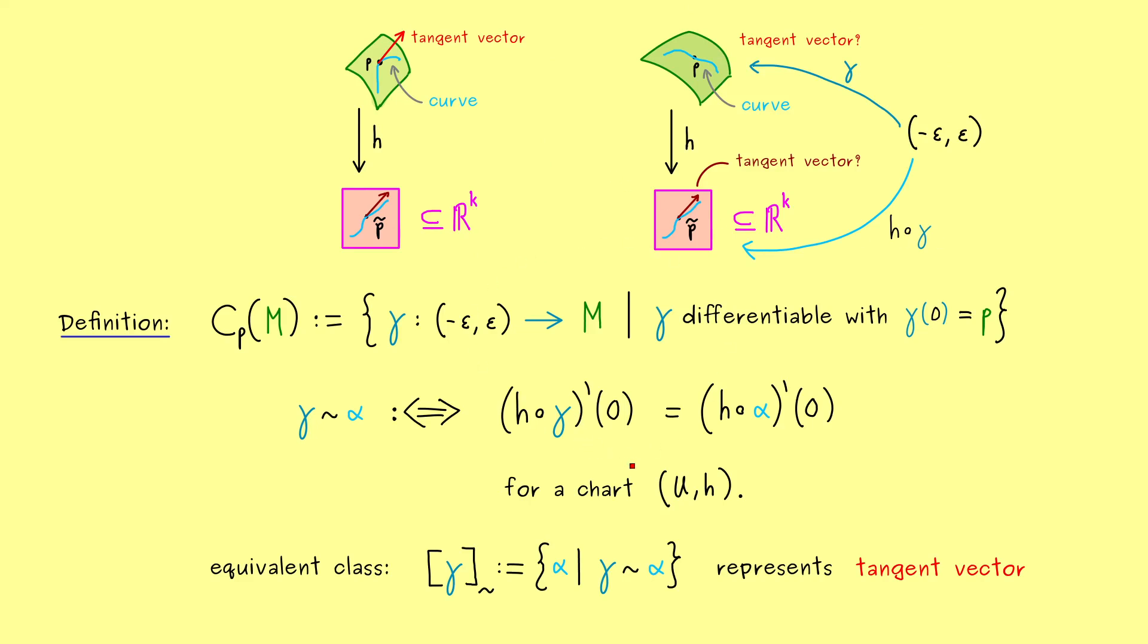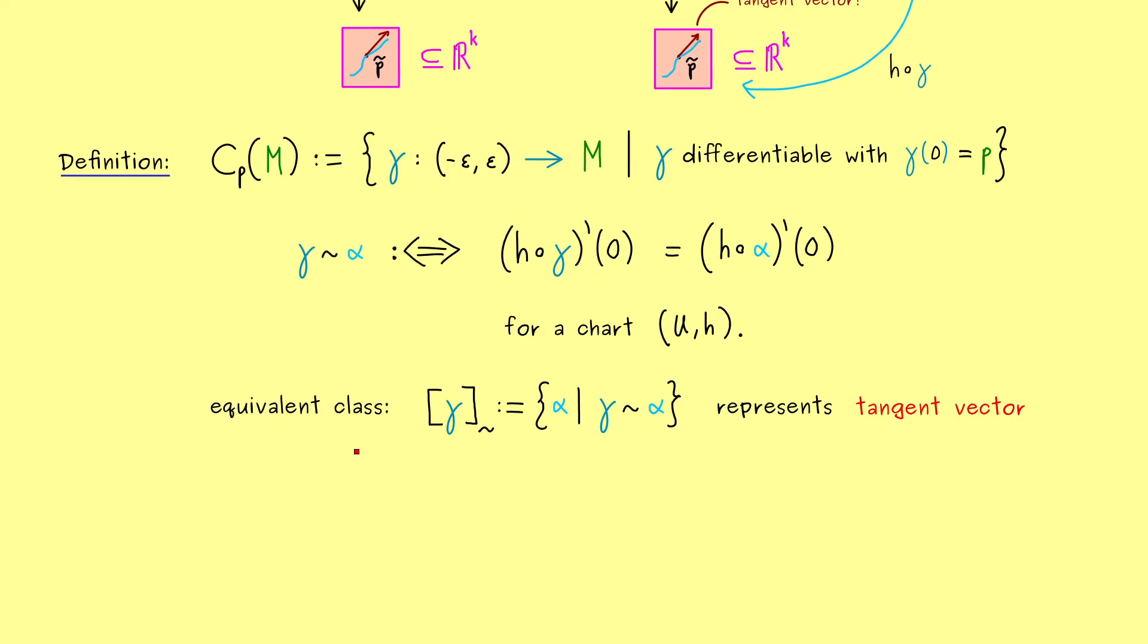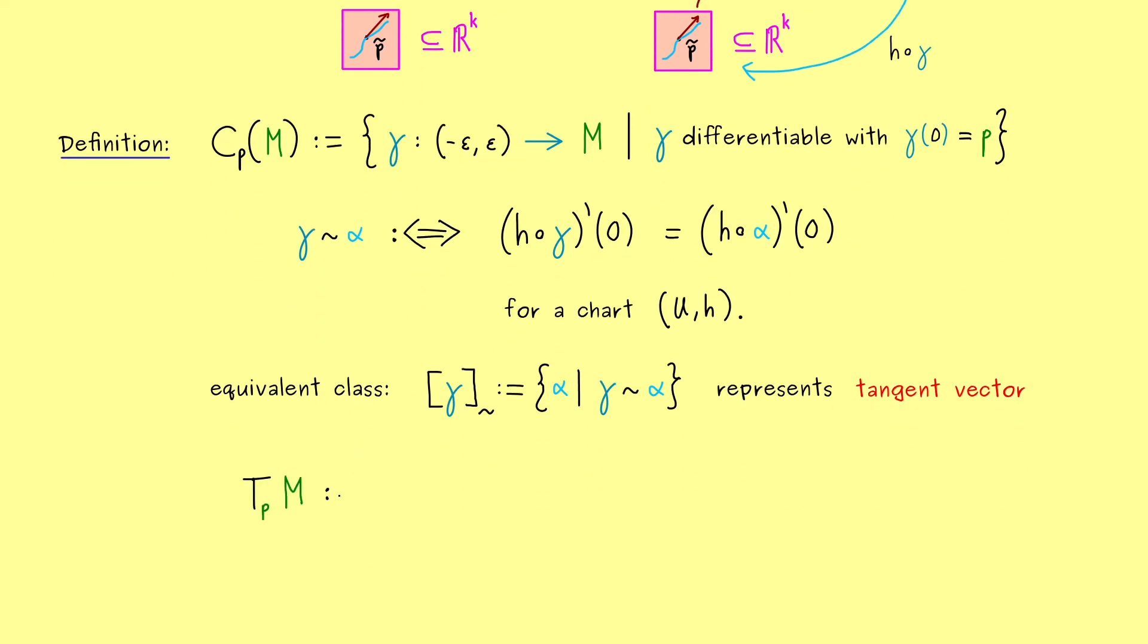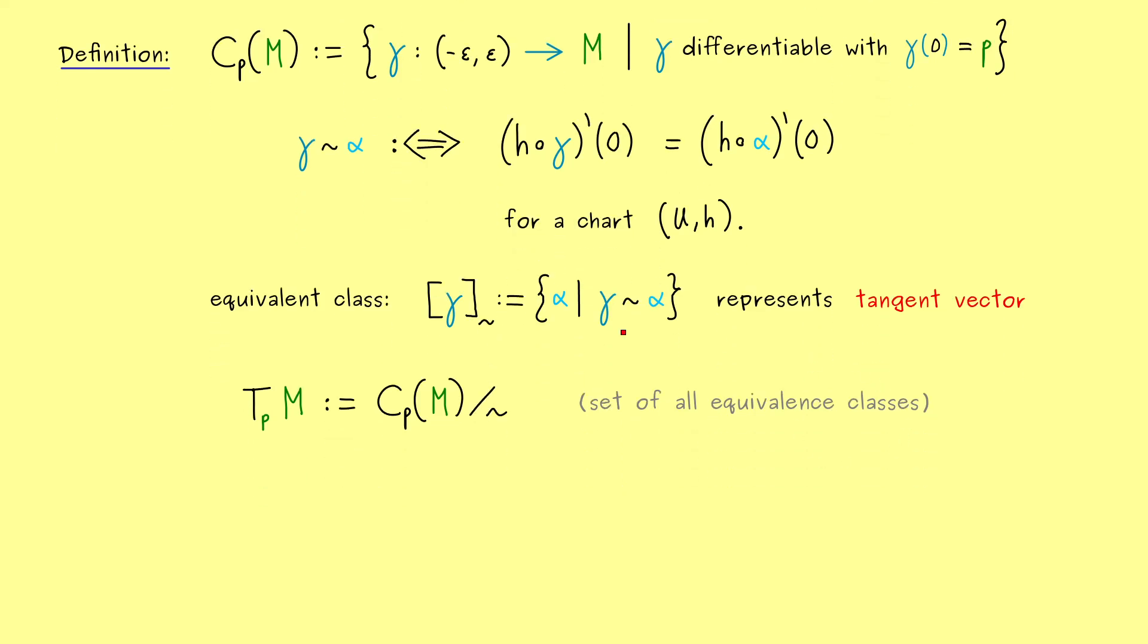Therefore, eventually we can define the tangent space for a manifold. And as mentioned before, the name is simply T_pM. And you might already guess, it's simply the set of all equivalence classes. And the set of all equivalence classes is usually denoted by this modulo operator. So not complicated at all. First we define all the boxes that represent tangent vectors, and then we simply calculate with these boxes. And there we have it. This is the famous tangent space for the manifold M.